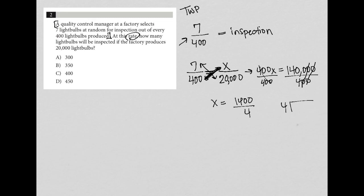So X would equal 1400 over four, which I can just divide over here and figure out the right answer. So four goes into 14 three times, that's 12, subtract, that becomes two, bring down the zero. I'm going to bring down both zeros, making that 200. Four goes into 20 five times. So my answer here for X is 350, which is choice B.